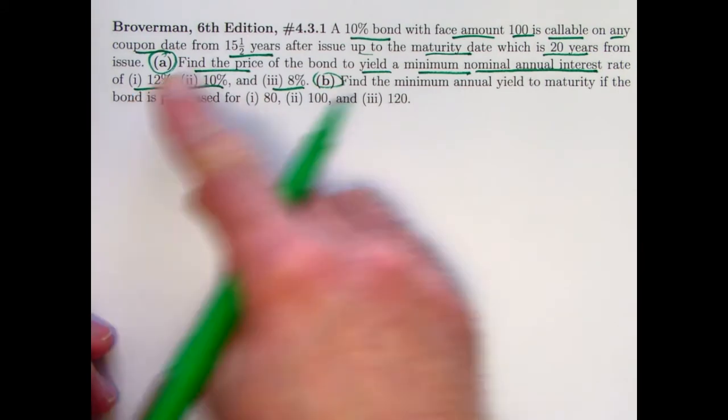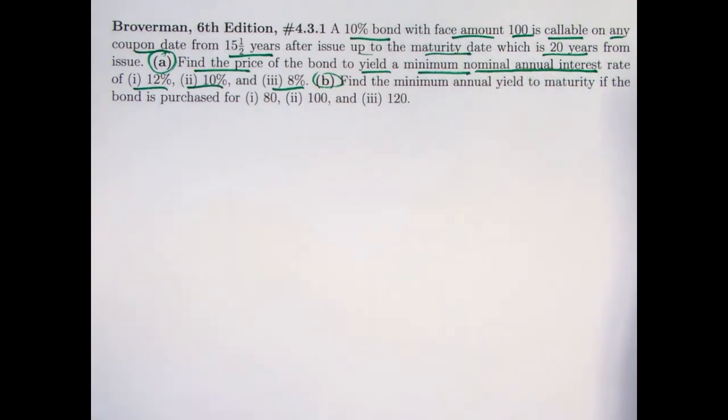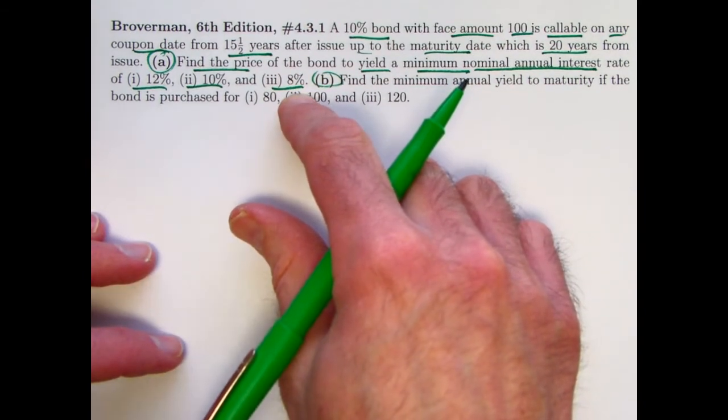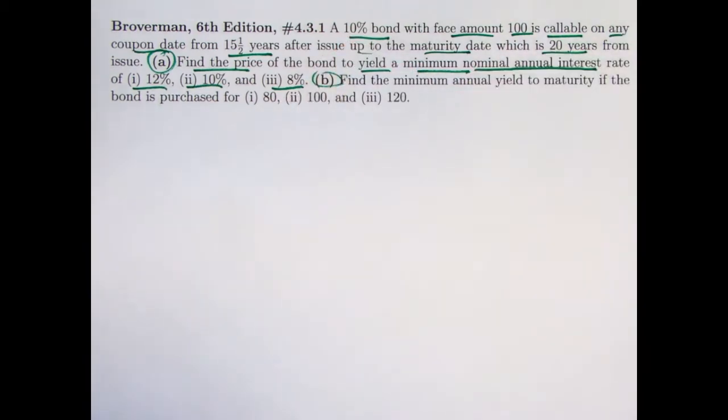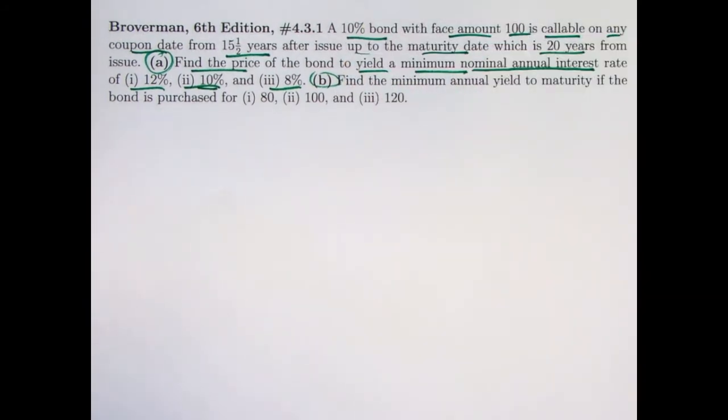Think about that before we go on here. When the yield is 12%, that's higher than the coupon rate. That means it's going to be bought at a discount. Your coupon payments are relatively small. They're not enough to cover the interest, so the balance goes up over time from the purchase price to the final redemption value. If it's bought at 8%, that's when the bond is bought at a premium. Your coupon amounts are relatively high compared to the yield rate.